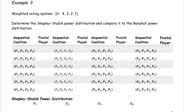Example 3: the weighted voting system with a quota of 6. The players have weights of 4, 3, 2, and 1. We want to determine the Shapley-Shubik power distribution and compare it to the Banzhaf power distribution, which we found in an earlier video. Here we have all of our sequential coalitions that we can create, and we're going to add one player in at a time. The first player added in that causes the coalition to win will be our pivotal player.